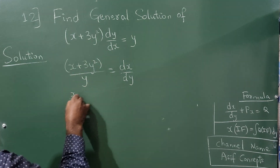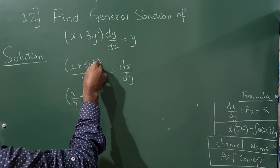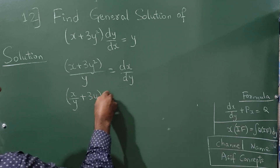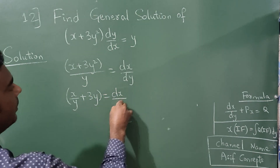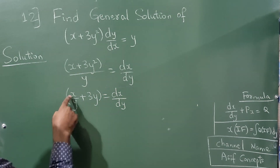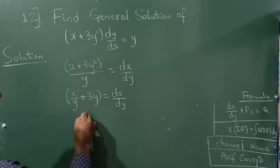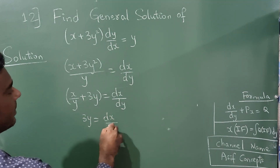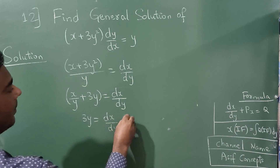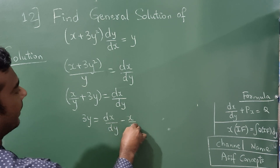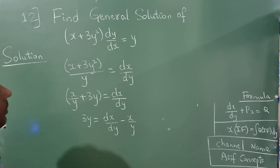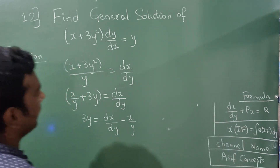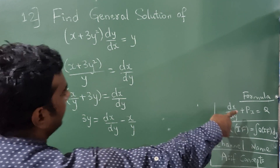Separate this: x/y + y²/y gives x/y + y, which equals dx/dy. Now take x/y to the right-hand side, so 3y = dx/dy − x/y. This is now of the standard linear ODE form.